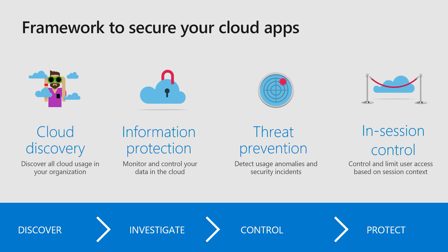And the last one is the in-session control, which is a new feature that was announced about six or eight months ago. Within in-session control, you actually have users go through particular activity checks if they are trying to do something within the SaaS applications — for example, if a user is trying to share data through OneDrive for Business with external parties, you can enforce in-session controls to have the company policies restrict sharing data with third parties.